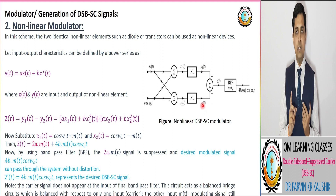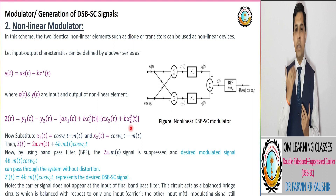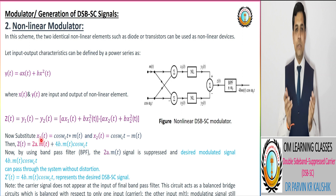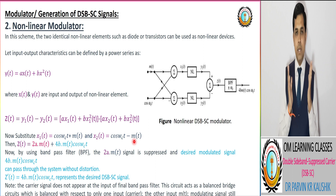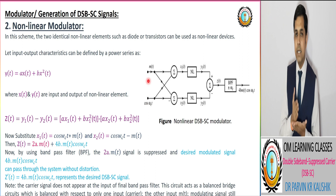Y1(t) is corresponding to A·x1(t) + B·x1²(t). Similarly, Y2(t) = A·x2(t) + B·x2²(t). The most important thing to remember is that x1(t) corresponds to cos(ωC·t) + m(t), and x2(t) is cos(ωC·t) − m(t). So the first input signal is the carrier signal with modulating signal added or subtracted, which corresponds to the DSB signal.